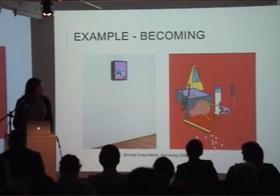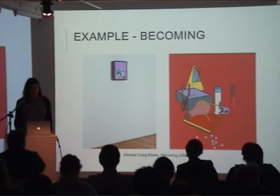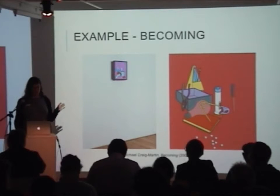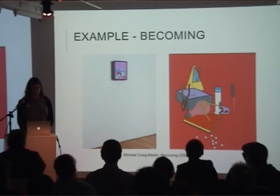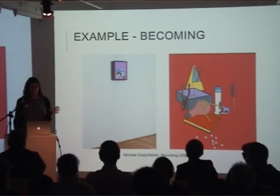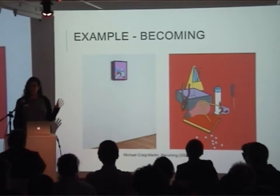This is an example of a software-based artwork in our collection called Becoming by Michael Craig-Martin. It's a computer-generated animation that is constantly changing in new compositions. Although it's a relatively straightforward work, we have encountered issues where the speed of the changing composition has altered.